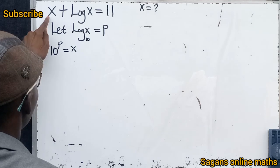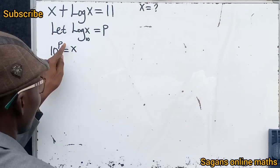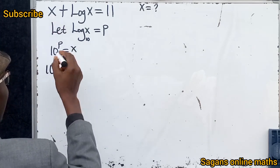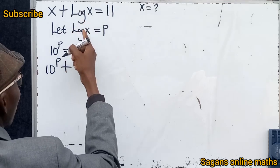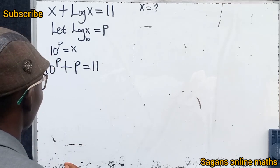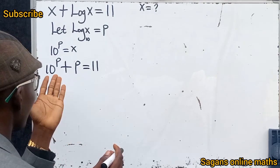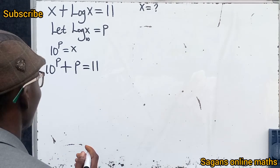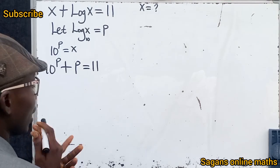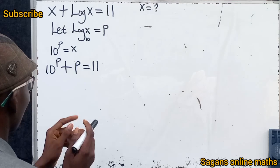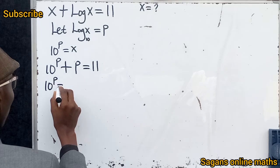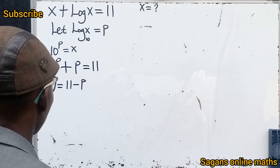Going back to our question, x + log x = 11. We know x = 10^p, so in place of x we put 10^p, and log x base 10 is p. So we have 10^p + p = 11. Now we subtract p from both sides to get 10^p = 11 - p.